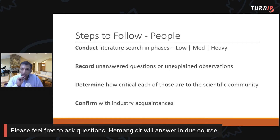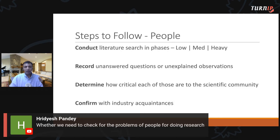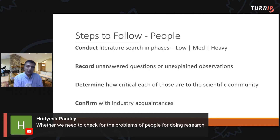Ridesh asked whether we need to check for problems of people when doing research. Yes, we do that — instead of talking to individual people, we determine that in the literature search phases. White papers are generally written by industry experts. If they are publishing something, that is an indirect proof that people are interested in that particular research area. In the medium phase, you look at research review papers, which tells you whether the research community also cares for that topic.